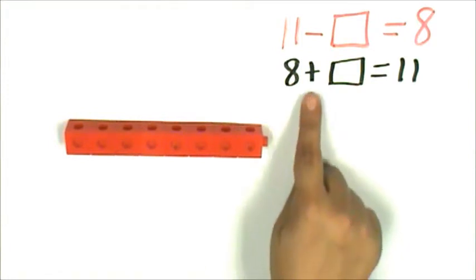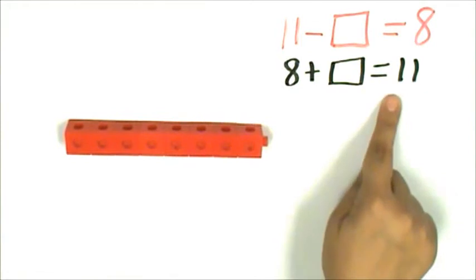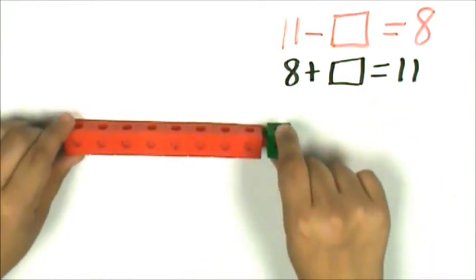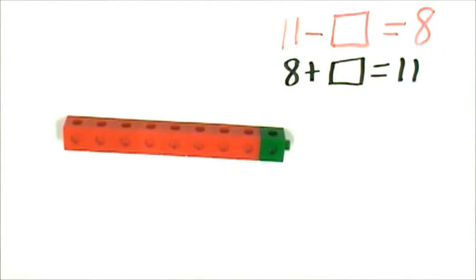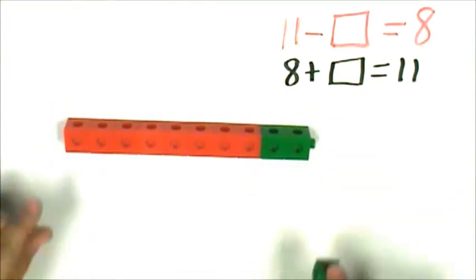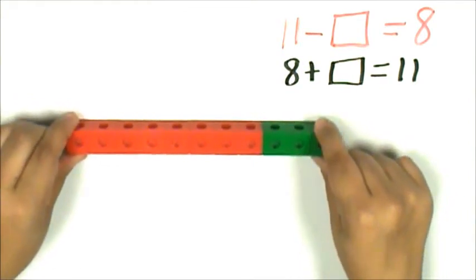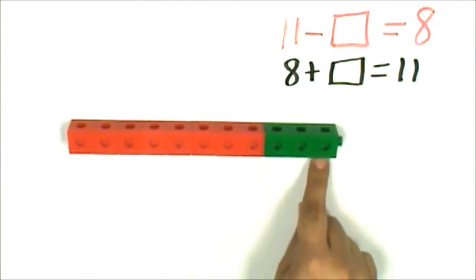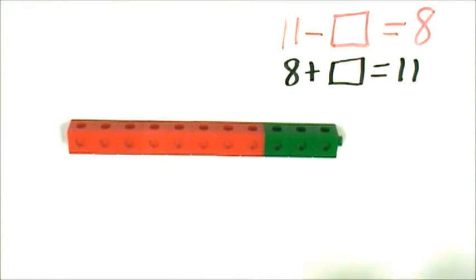Next, I will add on connecting cubes to make a train of 11. That was 8, 9, 10, 11. I had to add on 1, 2, 3 connecting cubes to make a train of 11.